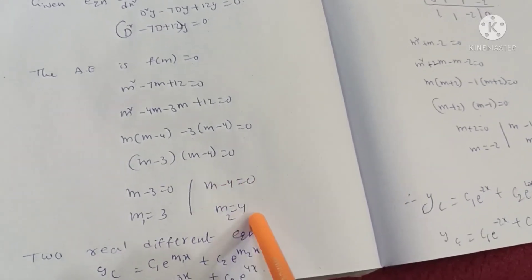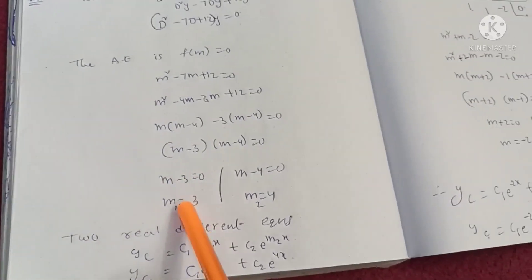m minus 4 equals 0, so m equals 4. m minus 3 equals 0, so m equals 3. We have two real roots and different roots.